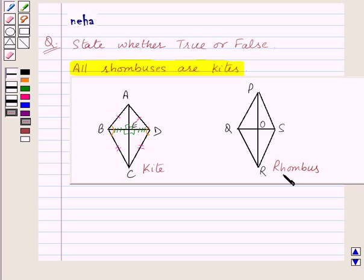Now let's see what is a rhombus. A rhombus is a parallelogram with sides of equal length. That is PQ is equal to QR is equal to RS is equal to SP.